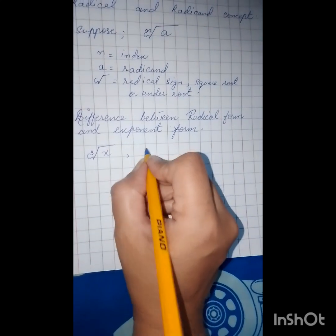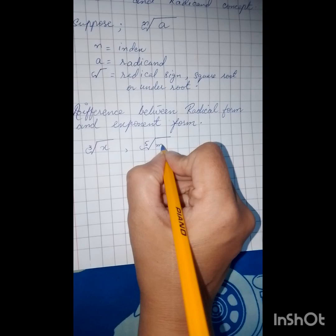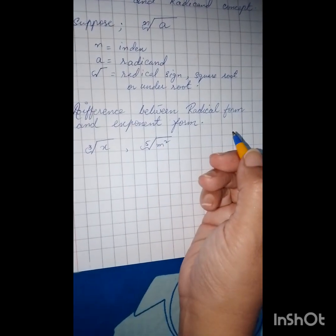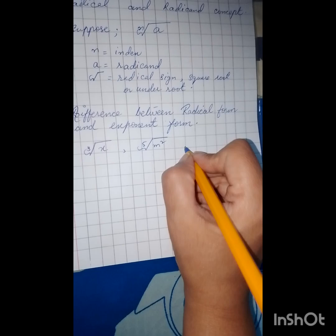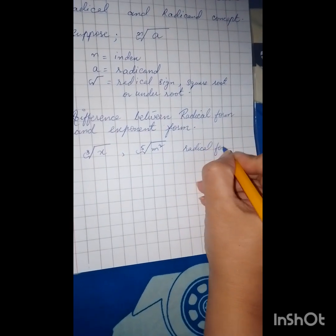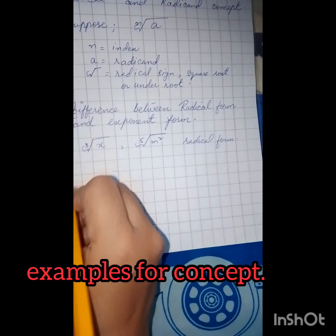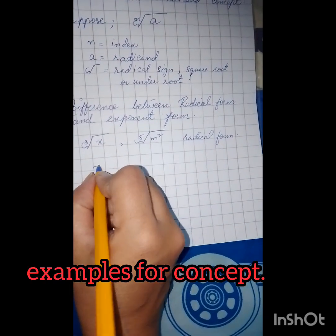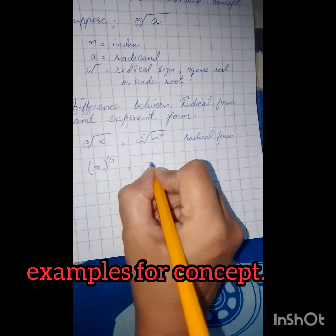The first thing is we are taking x equals nth root of a which is a radical form. If we want to change it into the exponent form, we simply write it as a to the power 1 upon n.